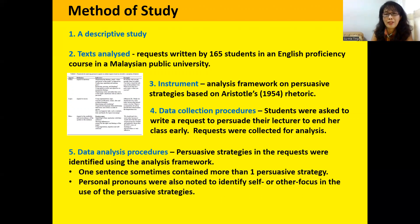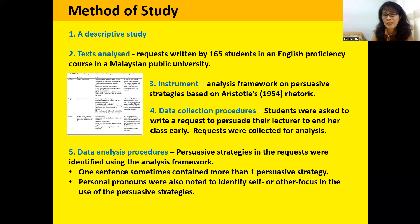That gives you an idea of where I got the 165 requests. For data analysis procedures, I described how I used the framework. One sentence sometimes contains more than one persuasive strategy, so I would analyze two within it. That is why the total number is not 165 but closer to 200 — because many students use two strategies to persuade. I also noted personal pronouns to identify the self or other focus in the use of persuasive strategies.